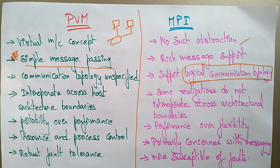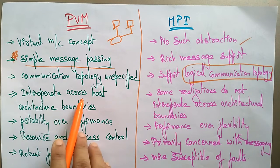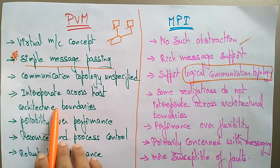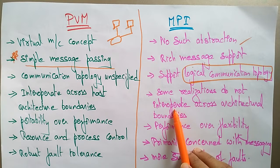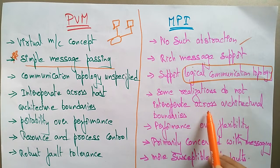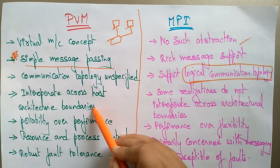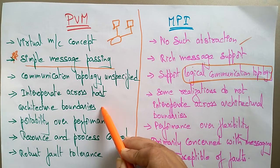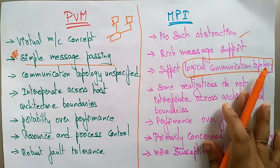Parallel Virtual Machine can interoperate across host architecture boundaries. However, in MPI, some realizations do not interoperate across architectural boundaries — so MPI cannot always interoperate across host architectures.